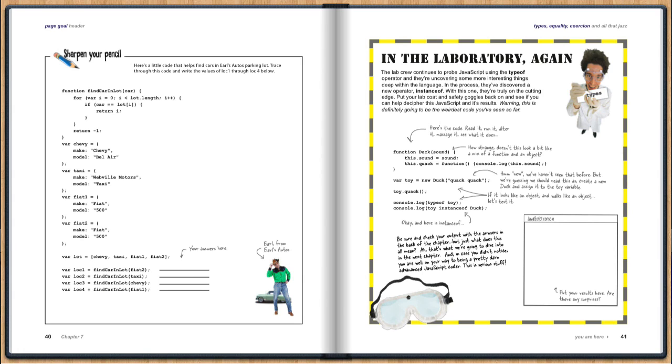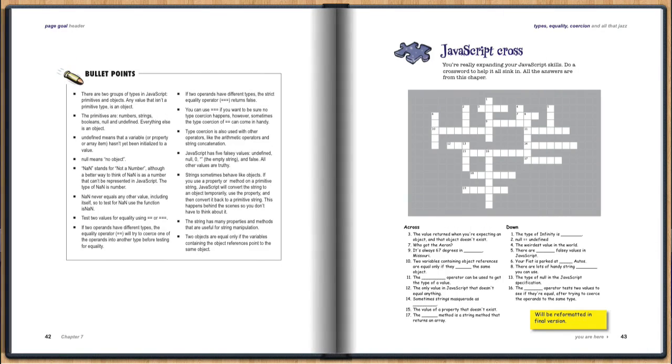So again, that's the chapter on types and values. It's an interesting chapter. It's a different chapter. And it launches you right into some more advanced object topics that we are going to go into in the next chapter.